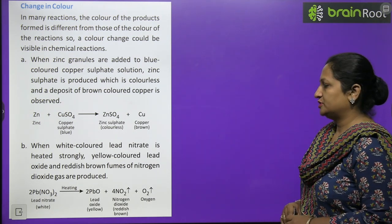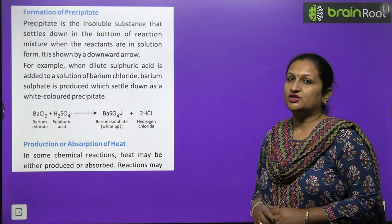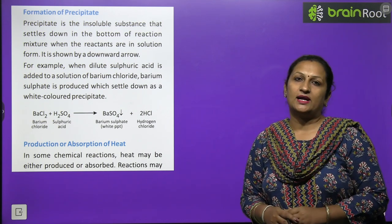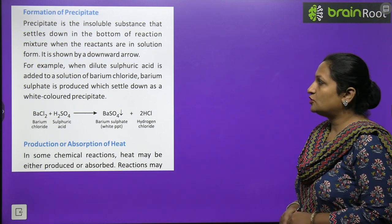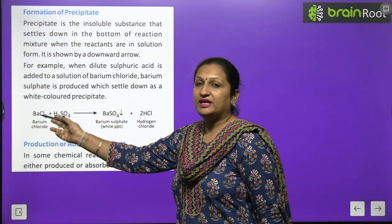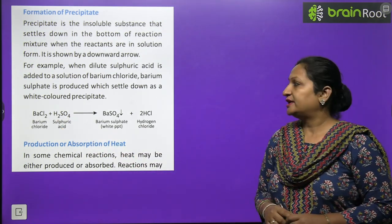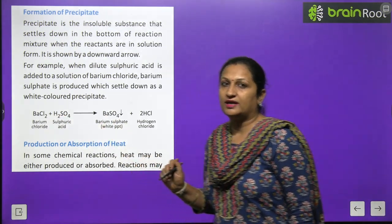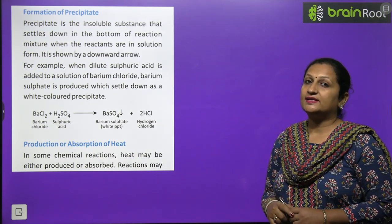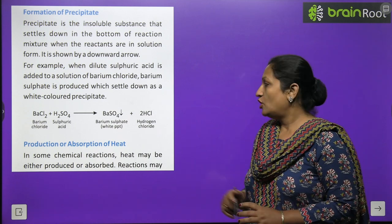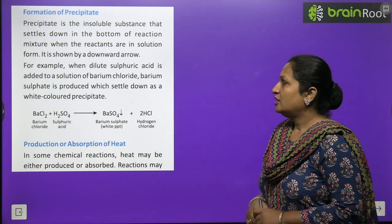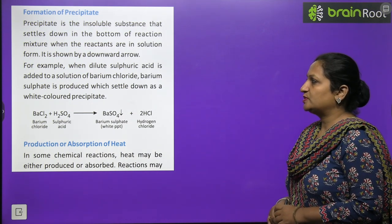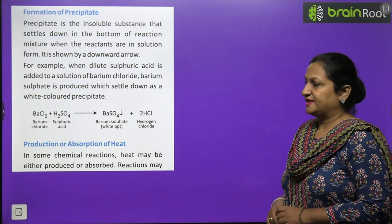Third characteristic: formation of precipitate. A precipitate is a substance that settles at the bottom of the test tube. For example, when dilute H2SO4 (sulfuric acid) is added to barium chloride solution, barium sulfate is produced as a white-colored precipitate that settles at the bottom, along with hydrogen chloride.